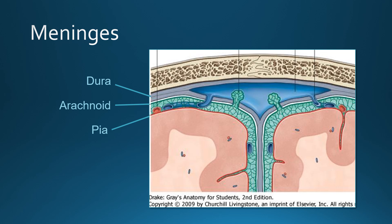The dura is firmly attached to the calvarium. The leptomeninges — the arachnoid and the pia — the arachnoid is just beneath the dura and has a lacy-like appearance. The pia is firmly adherent to the gyri and goes into all of the fissures.